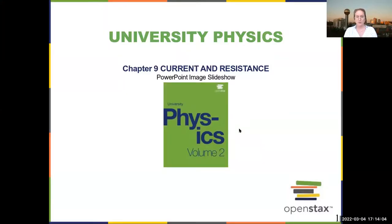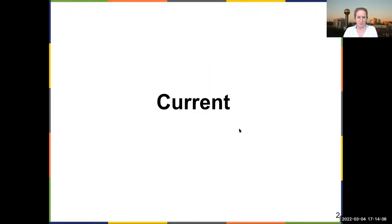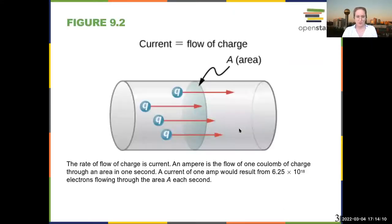All right, so we're going to be talking about current and resistance. This is chapter nine. We're going to start with current. Current is the flow of charges, and we measure the rate of flow of charges as an amp. The SI units of an amp are Coulombs per second.